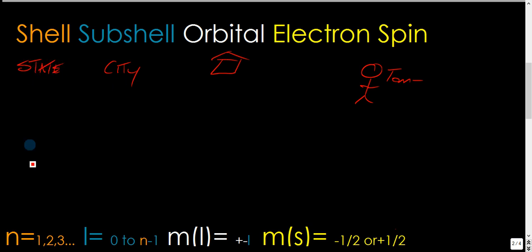I've highlighted these down here to correlate with the shell, the subshell, the orbital electron spin. This is the quantum, these are the quantum numbers right here. These aren't numbers as in like three apples or four donuts. They're just numbers as in like the address on your house.